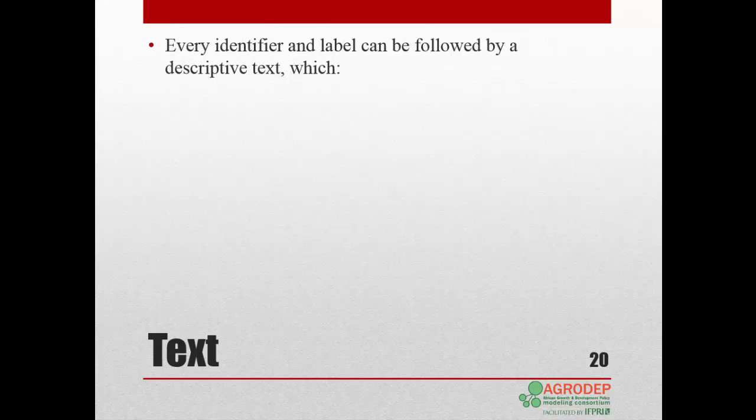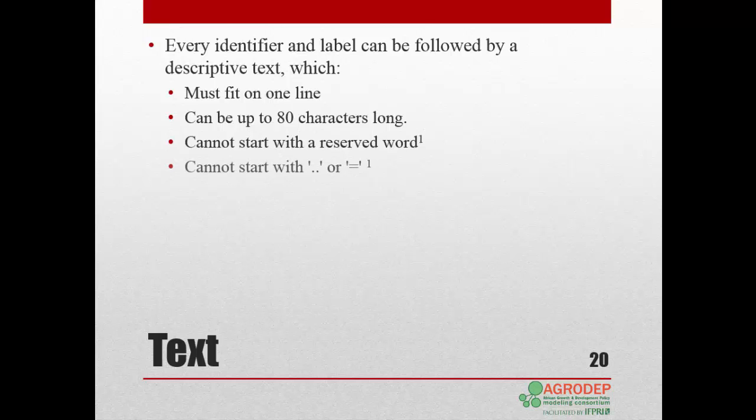Descriptive text that follows identifiers and labels must also follow the following rules. It must fit on one line. It can be up to 80 characters long. It cannot start with a reserved word unless the text is included in quotes. It cannot start with a double dot or an equal sign unless the text is included in quotes.